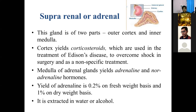Cortex hormones are helpful in overcoming shock and surgery and are also utilized in non-specific ailments. The medulla portion of the adrenal gland releases stress hormones — adrenaline and noradrenaline. The yield of adrenaline is 0.2% on a fresh weight basis and 1% on a dry weight basis. The medulla portion is extracted in water or alcohol.